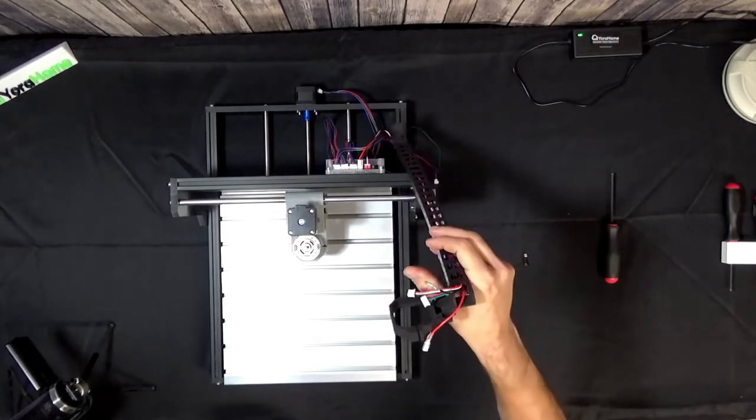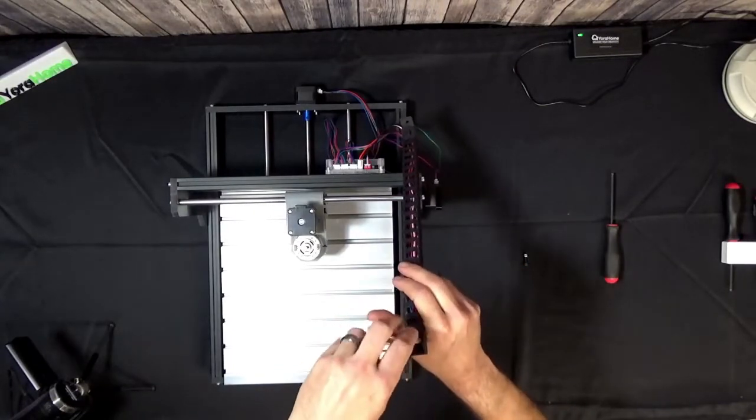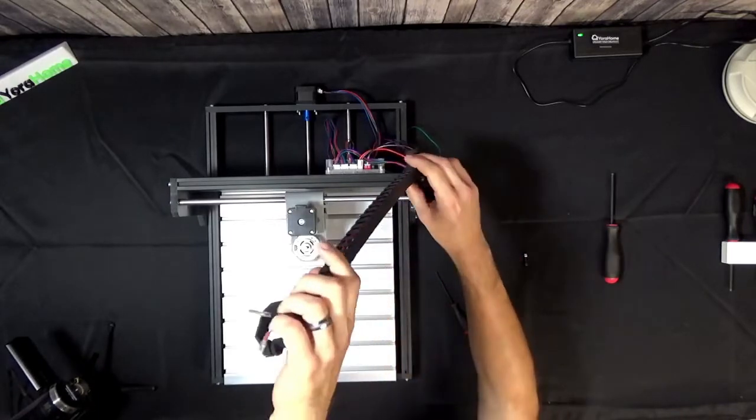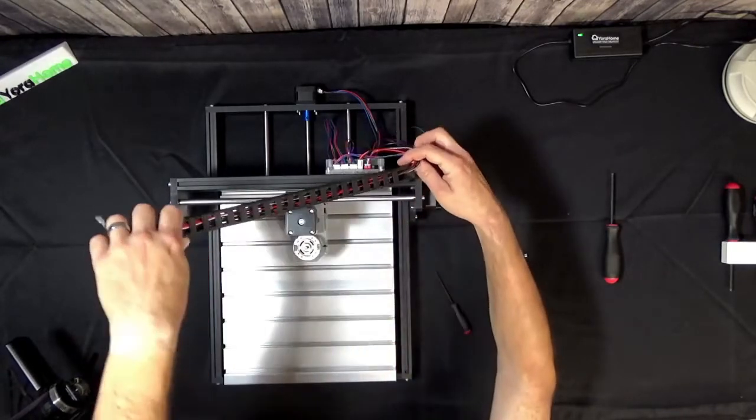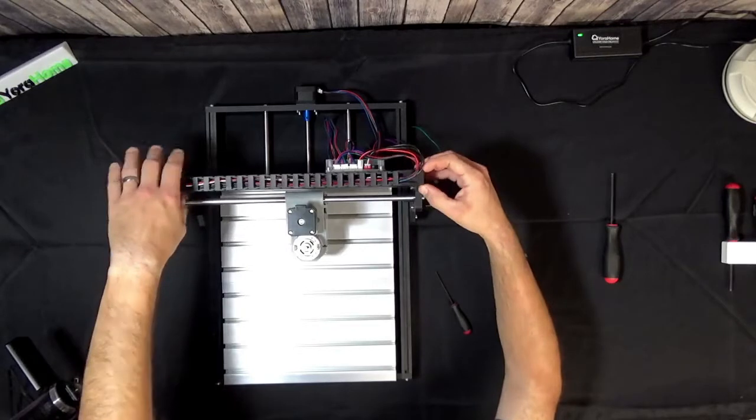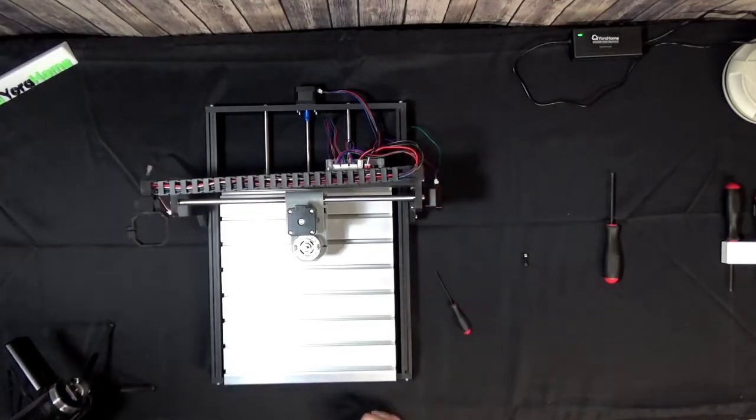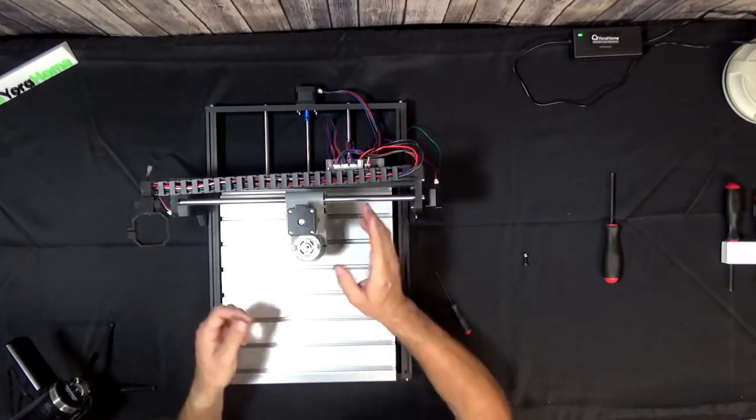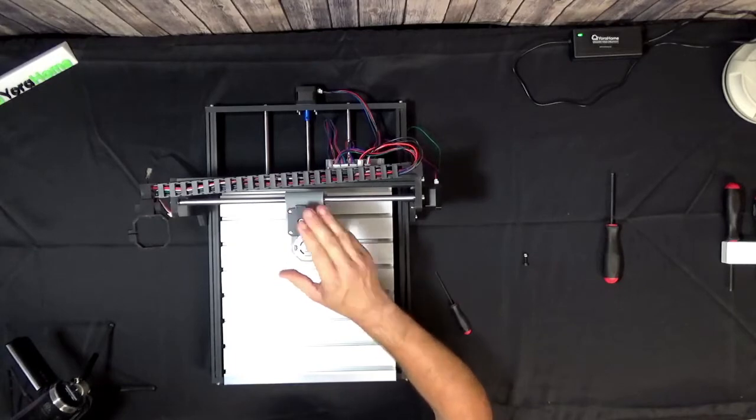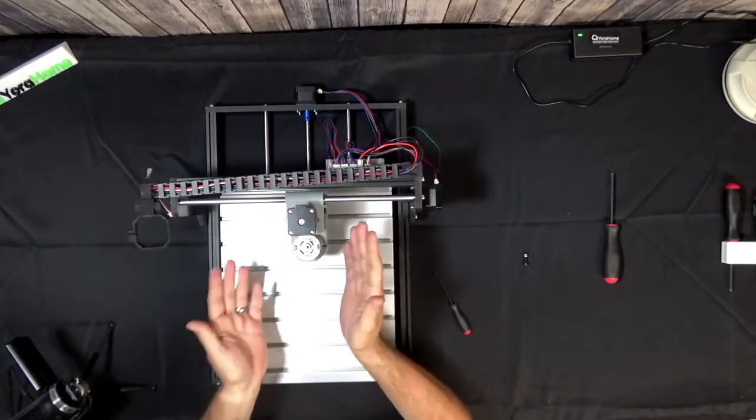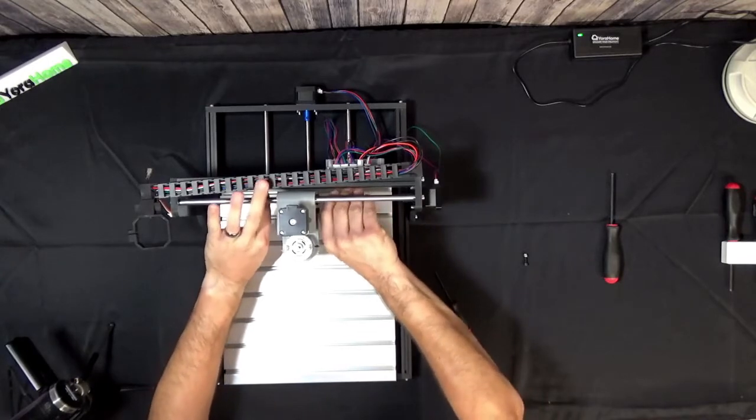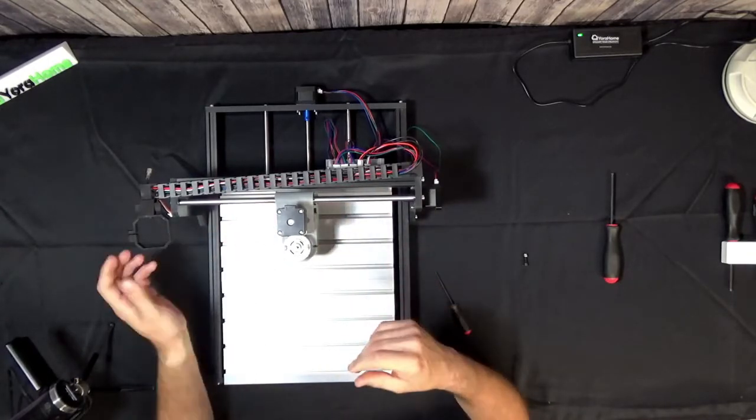Switch to an overhead view. So once you have it where the wires come out the end and all those gates are closed, we're going to lay the drag chain assembly down on the top of the gantry like that.